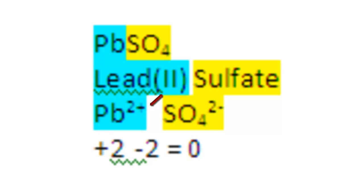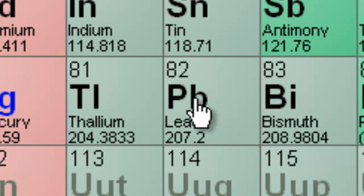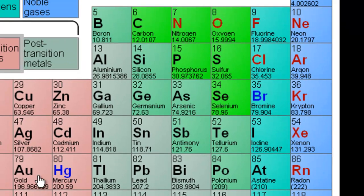This is lead 2 because there's one sulfate, which is negative 2, therefore the lead must be positive 2. And lead is located in the periodic table as a main group metal. It is not a transition metal or an inner transition metal, but it's a main group metal, and it does need a Roman numeral included after the name.